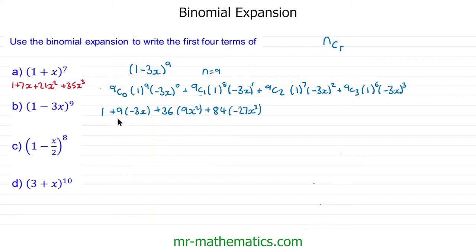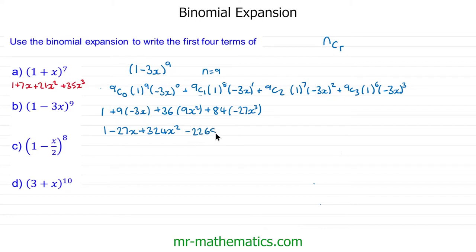Tidying up further: we have 1, then 9 times negative 3 is negative 27, giving negative 27x. Then 36 times 9 is 324x². And 84 times negative 27 is negative 2268x³. So these are the first four terms of this expansion.